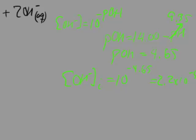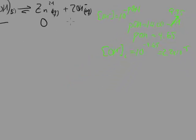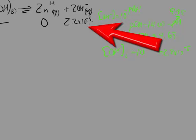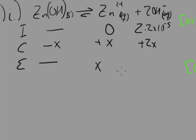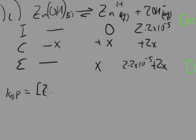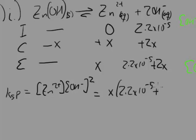When we set up our rice chart, we put the initial concentration of hydroxide as 2.2 times 10 to the negative fifth. The change: we lose some moles of zinc hydroxide, and because of one-to-one stoichiometry, we gain the same number of moles of zinc ion, and 2 times the moles of hydroxide ion. At equilibrium, concentration of zinc is X, and concentration of hydroxide is 2.2 times 10 to the negative fifth plus 2X. So Ksp equals X times (2.2 × 10⁻⁵ + 2X)².